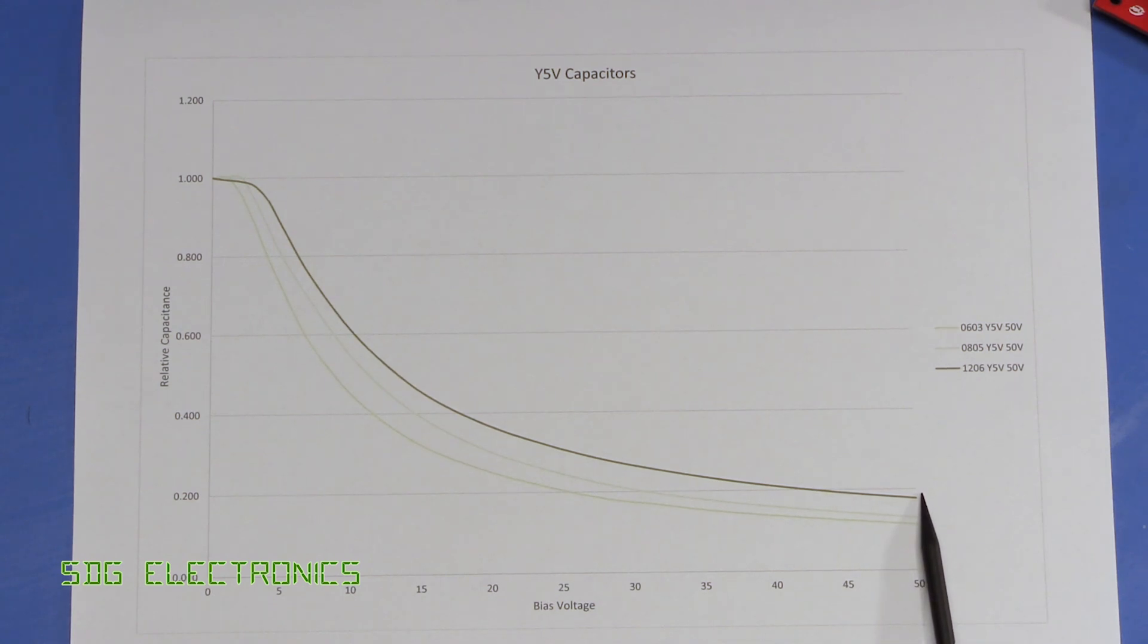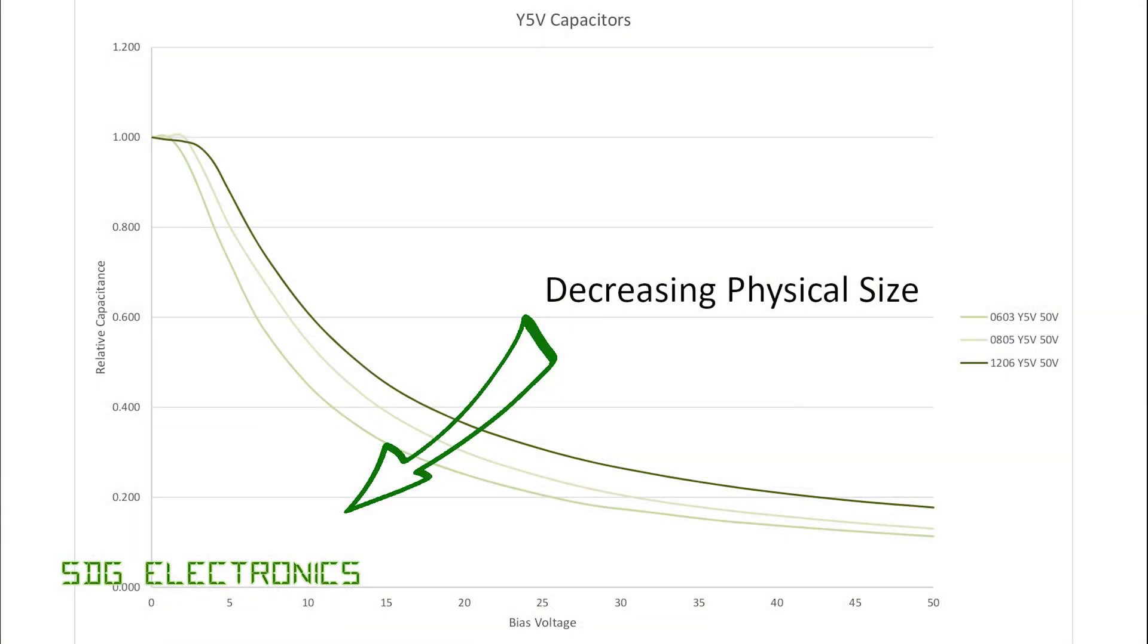But you can see here they all start off at their specified capacitance, but by the time they've reached their maximum working voltage they're only at 20 percent of their original capacitance value. And one thing that you can note here is that the larger 1206 capacitor does drop very slightly less rapidly than the smaller 0603 capacitor.